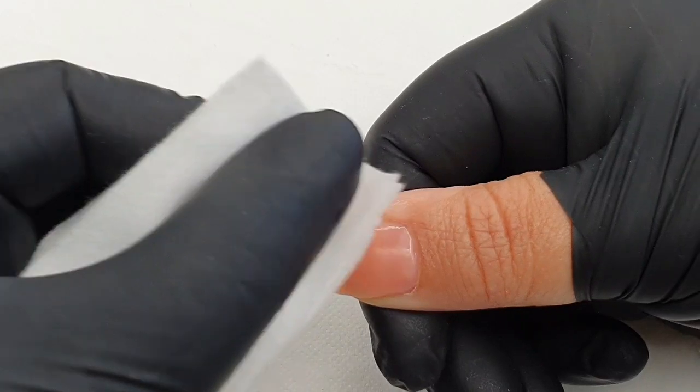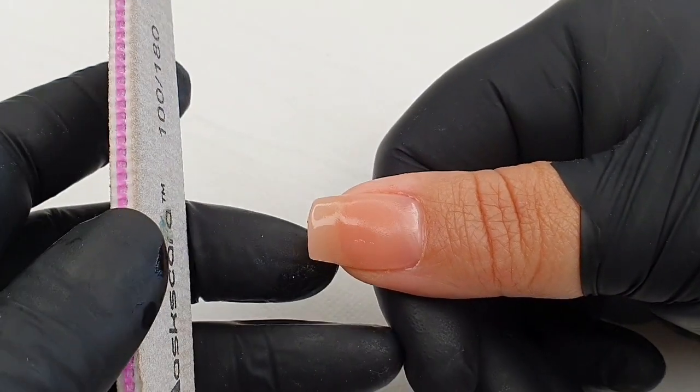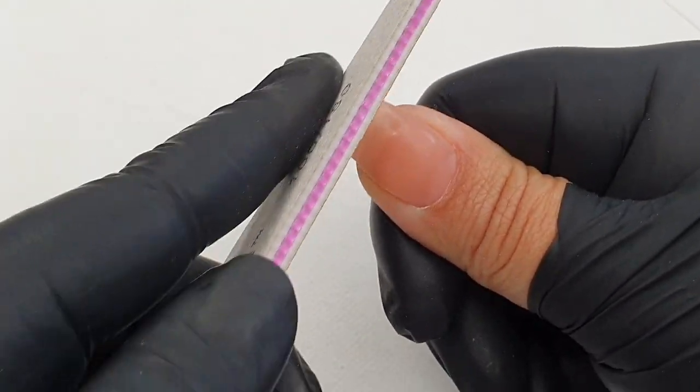There will be a sticky layer because it's kind of like a builder gel. Make sure you wipe that sticky layer off with some cleanser. Now we're going to start our filing process.